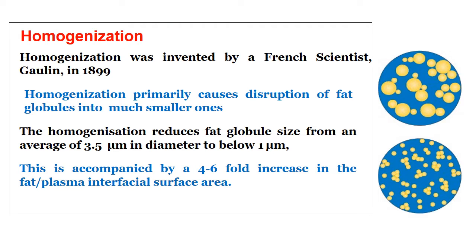Homogenization was invented by a French scientist named Gaulin in 1899. Homogenization primarily causes disruption of fat globules into much smaller ones. It is a process of breaking the larger fat globules into smaller ones so that they can be uniformly distributed in the milk. Homogenization reduces fat globule size from an average of 3.5 micrometers in diameter to below 1 micrometer. This is accompanied by a 4 to 6 fold increase in the fat and plasma interfacial surface area.